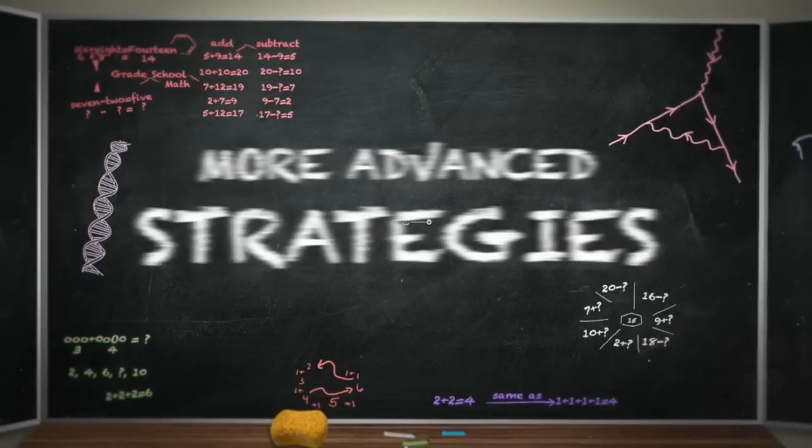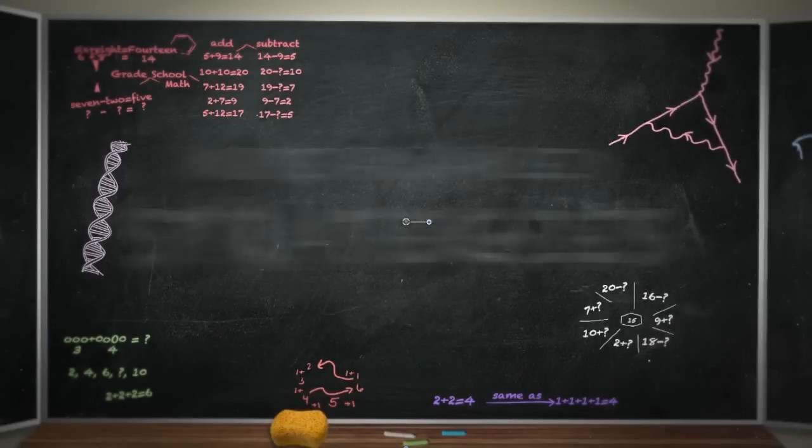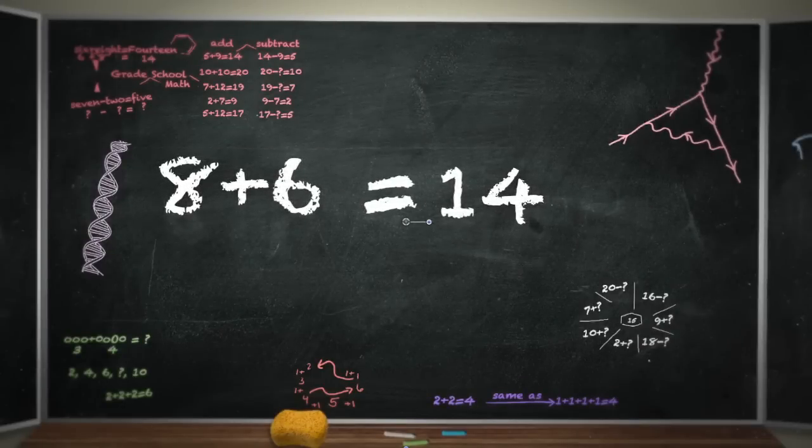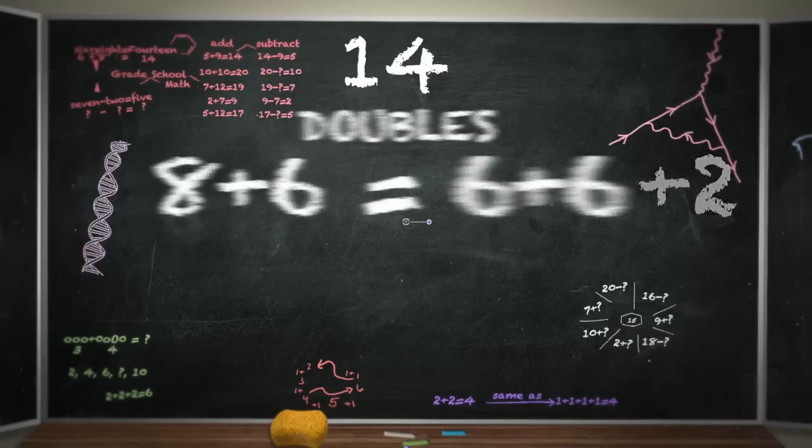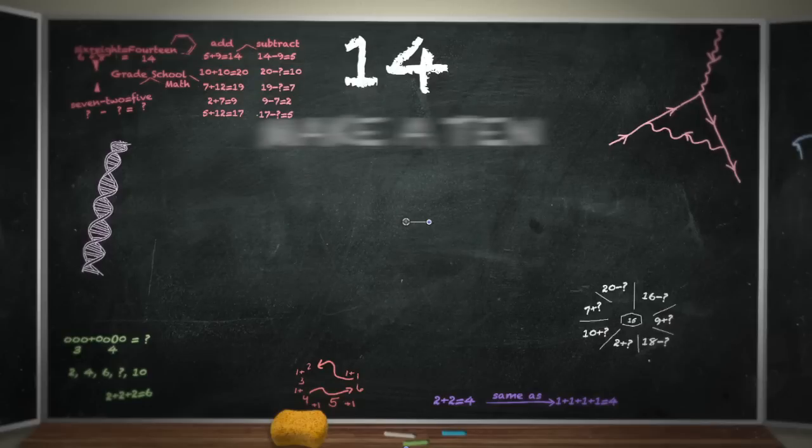Instead, what we would really love is for kids to have some more advanced strategies. If we're doing eight plus six, we'd want them to think, that's like six plus six, they're doubles. They know their doubles really well. So it's like six plus six and an extra two. Or we want them to learn that idea of make a ten.